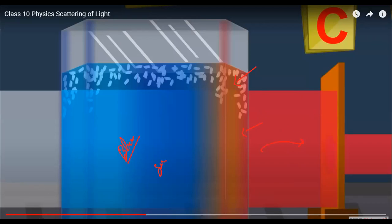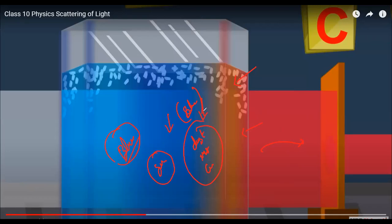With this experiment, we can explain why the sky is blue in color. The sky is blue because, like in this solution with colloidal particles, in the sky you have colloidal particles of dust, water droplets or mist, and some gas particles. These small particles can scatter only the blue light, which is why the complete sky appears blue in color.